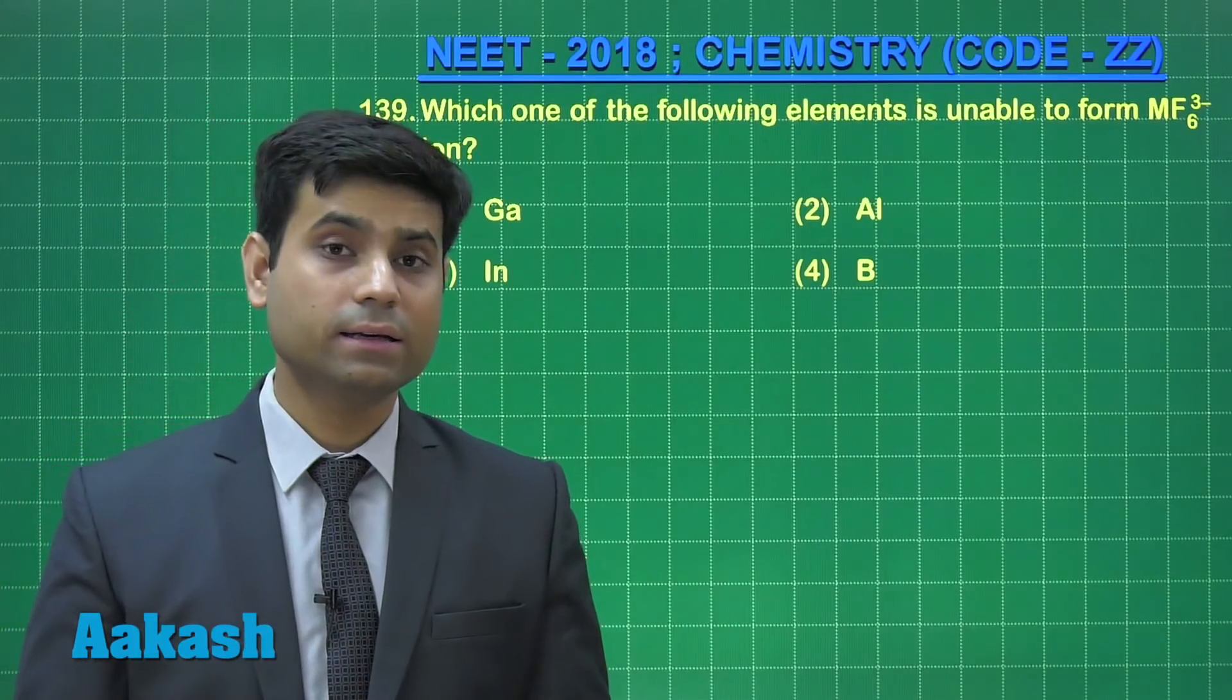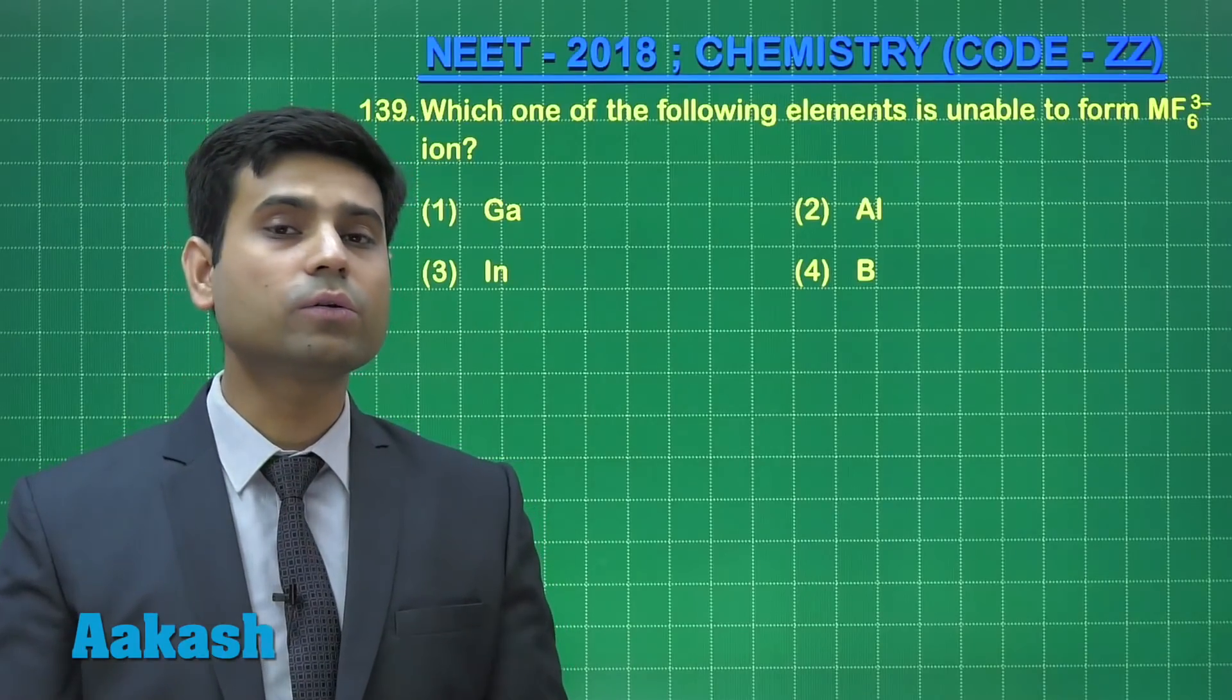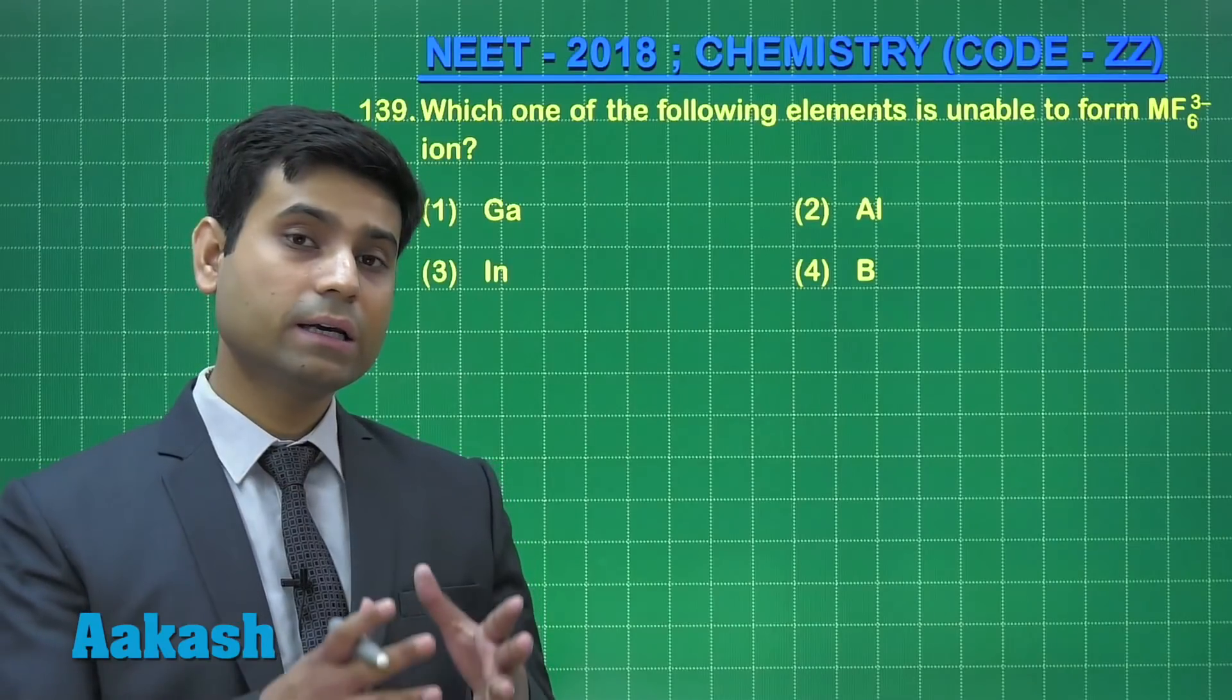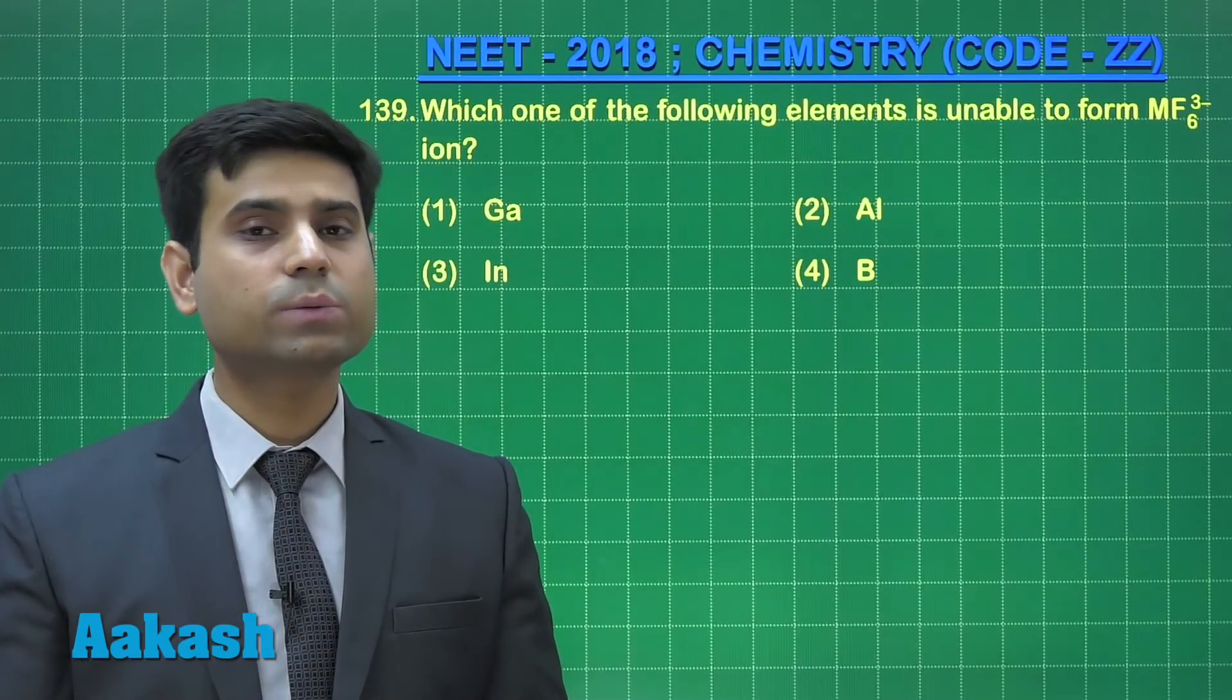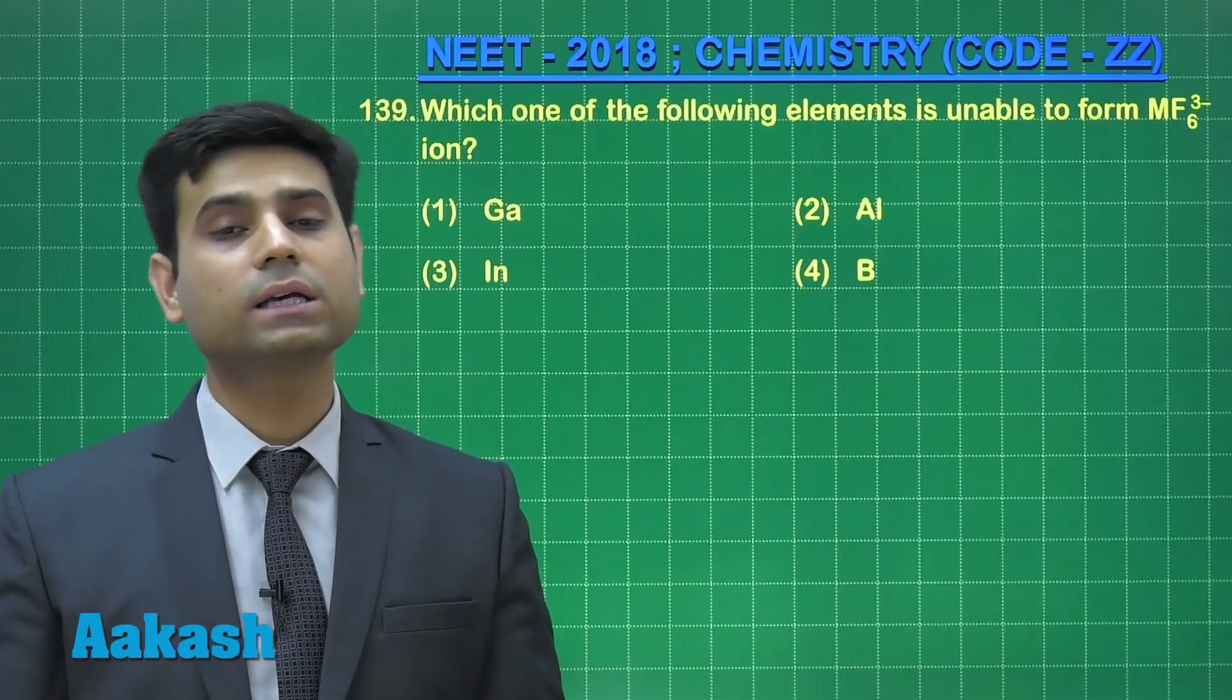Students, MF6³⁻ ion can only be formed by that element of the 13 group which contains vacant d orbital, because it requires 6 vacant orbitals for occupying electrons from 6 fluoride ions.